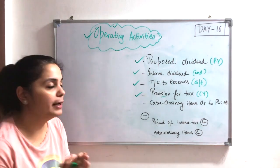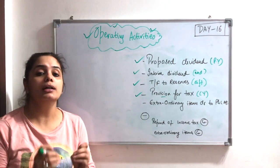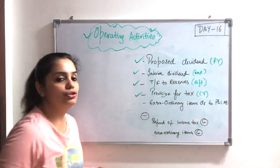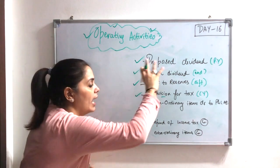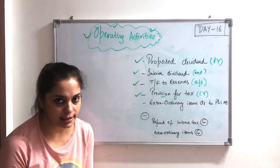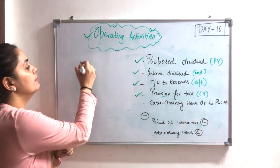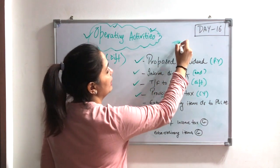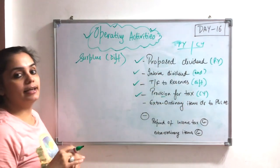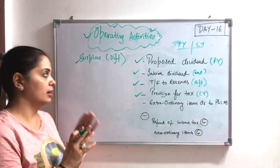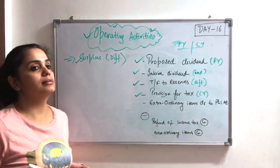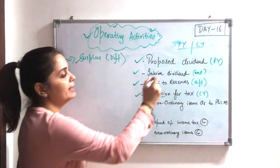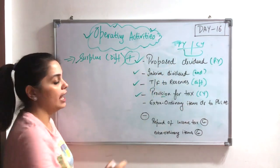Now, for operating activities, if I want to find the net profit, what will I do? I will add the items from the balance sheet question, and my net profit will come. The first step is: what is my surplus? We have to take the surplus from both the previous year balance sheet and the current year balance sheet. I will find the difference of the profit and loss account - the surplus difference.